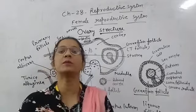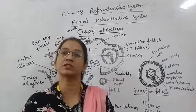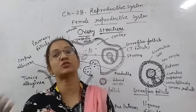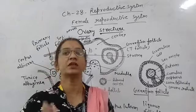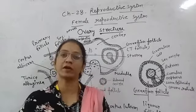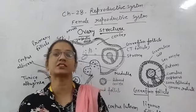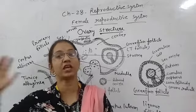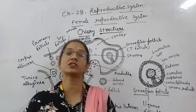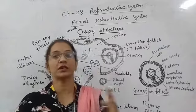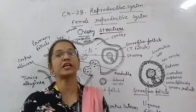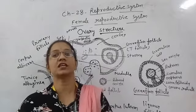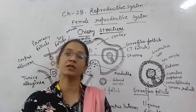Now, talking about follicles: the oogonia cells are converted into follicles. Some cells change into primary oocytes, and ultimately a secondary oocyte is released by the ovary.